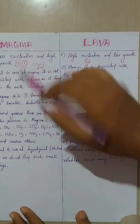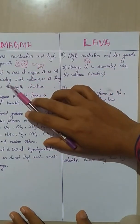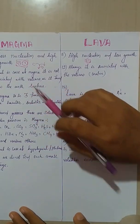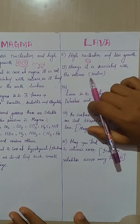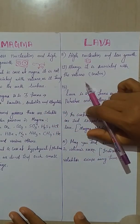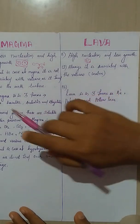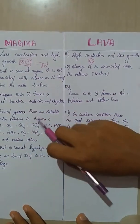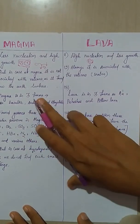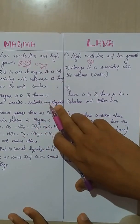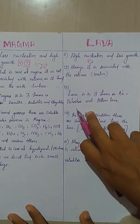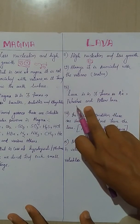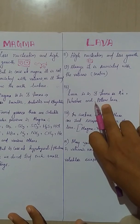Magma is not associated with volcanoes, as it is found below the earth's surface. In case of lava, always it is associated with volcano. In case of magma, we are getting three different forms: basaltic, andesitic, and rhyolitic. But in case of lava, we are getting aa structure, pahoehoe structure, and pillow lava structure.